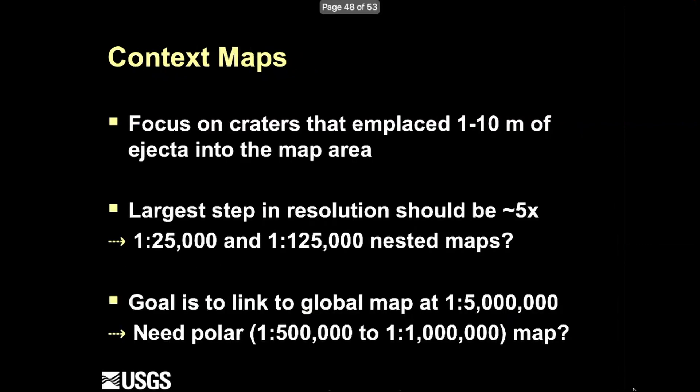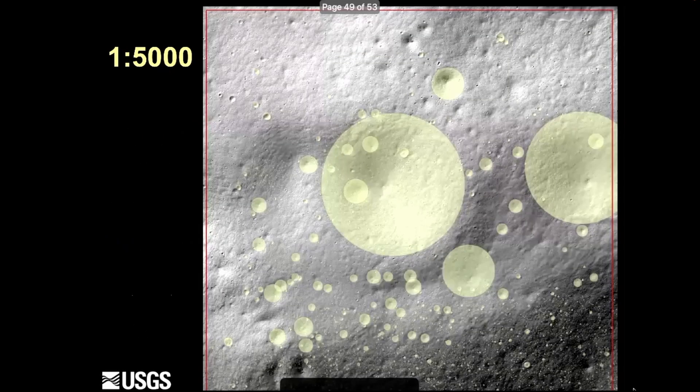For the context maps covering larger areas, we're looking at what can dump material into the mission area. We're going out in scale steps of five: 1:25,000 and 1:125,000. We also realize that to link out to the big global maps — the published one is at 1:5,000,000 — it seems critical to have something at an intermediate scale, exactly the kind of map that Jim just showed us. That intermediate scale seems critical to allow this mapping to tie into the big global picture.